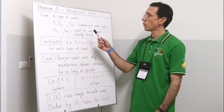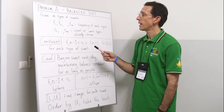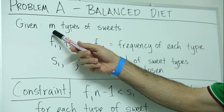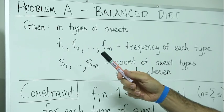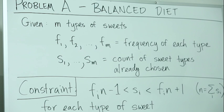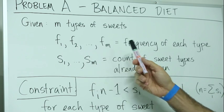So in this problem we have a little boy Danny who likes to eat sweets. In particular, he likes to eat M types of sweets. He wants to choose among these M types of sweets, and being a fastidious boy, he wants to maintain some sort of balance in his diet. This balance is accounted for with a desired frequency of each of these types of sweets.